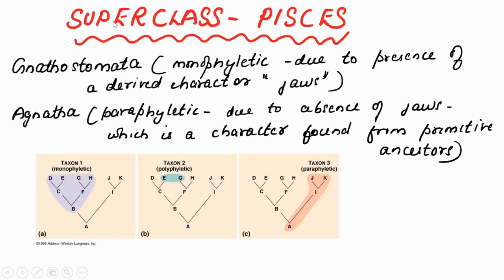Now we move to the core of our chapter. Superclass Pisces belongs to Gnathostomata. In a former chapter we learned that Subphylum Vertebrata is classified into Agnatha and Gnathostomata — that Gnathostomata is this one. It is monophyletic — why? Because of the presence of a derived character called jaws.